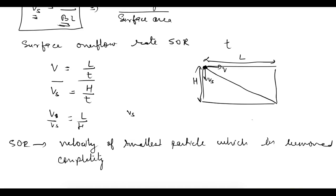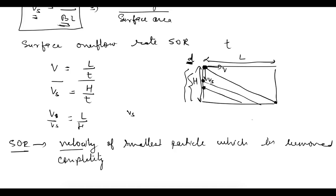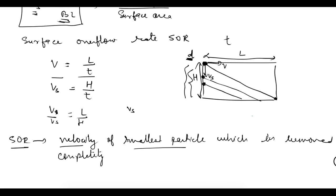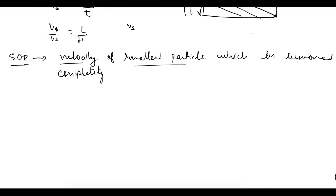If a particle of diameter d starts from the topmost point and just reaches the bottom at the outlet end, it is removed. If the same particle starts from a point below the top, it will also be removed — it hits the bottom before the outlet. Since even the particle starting at the very top is removed, all particles of that size starting below are completely removed. That's why the SOR represents the smallest particle removed 100%.